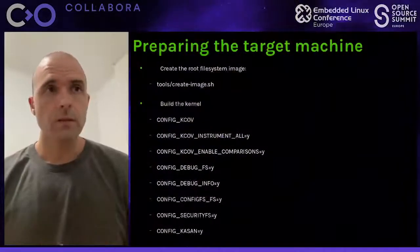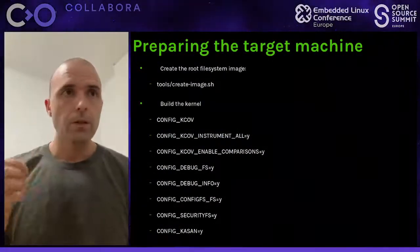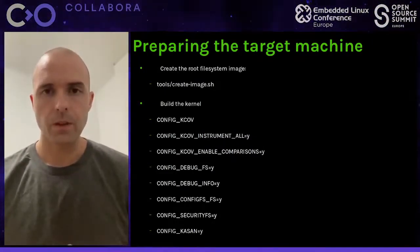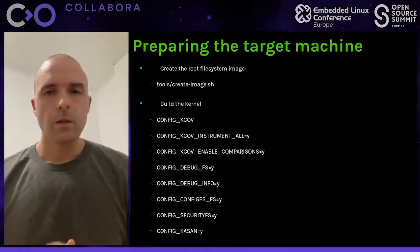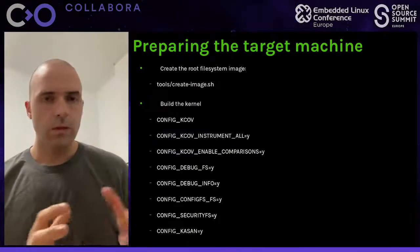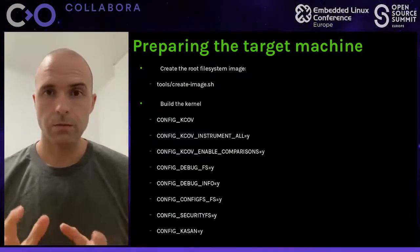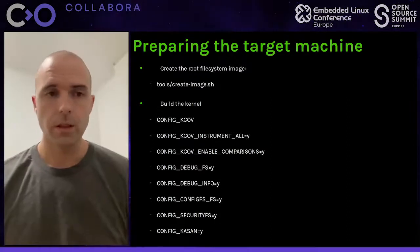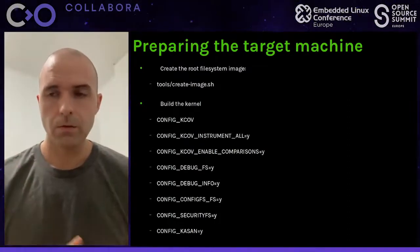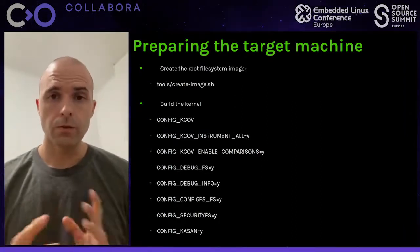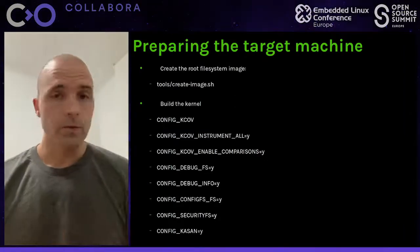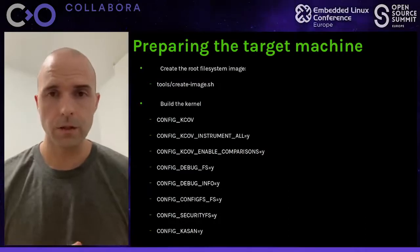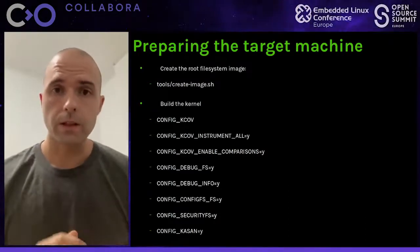Now that we have a general idea about Syzkaller, we're going to see how to use it for a specific use case: fuzzing a driver on a dedicated hardware board. There aren't many requirements on the type of machine — as long as it can run Linux and has a network link with the host, because the host will open an SSH session to the target machine. I'm going to use a RockPi4 board, because the driver I want to fuzz — which is the Video for Linux 2 driver — runs on that hardware.